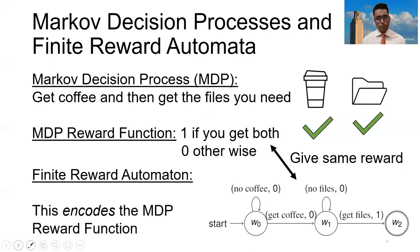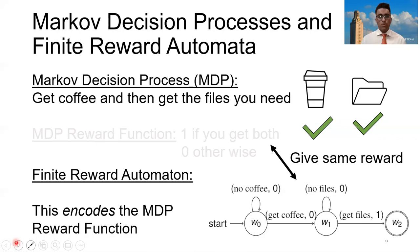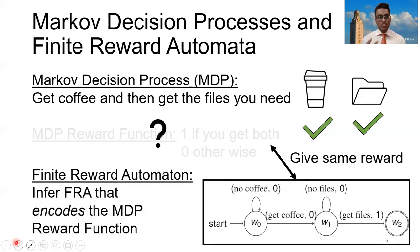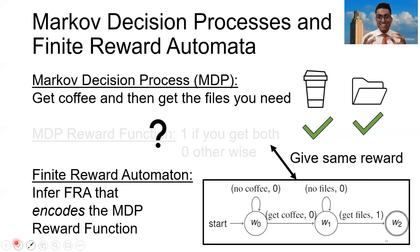This is important for reinforcement learning. In a reinforcement learning scenario, the agent doesn't know what the reward function is, and it needs to figure it out somehow. Our algorithm allows the agent to infer a finite reward automaton that encodes this reward function. Once it's able to figure out what that reward automaton is, it uses that automaton for reinforcement learning, and this has a powerful impact.